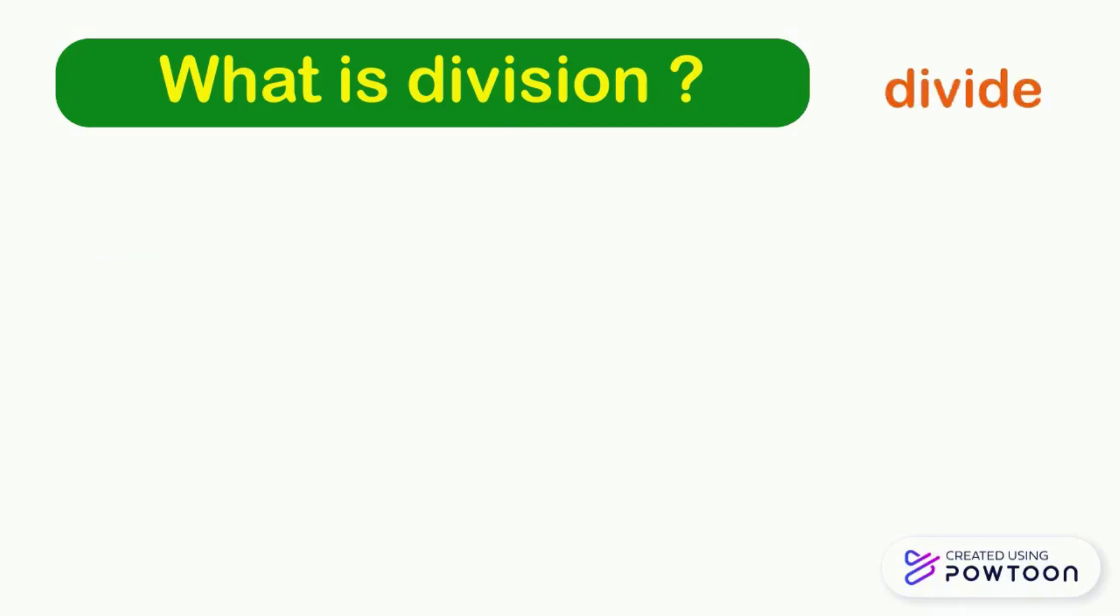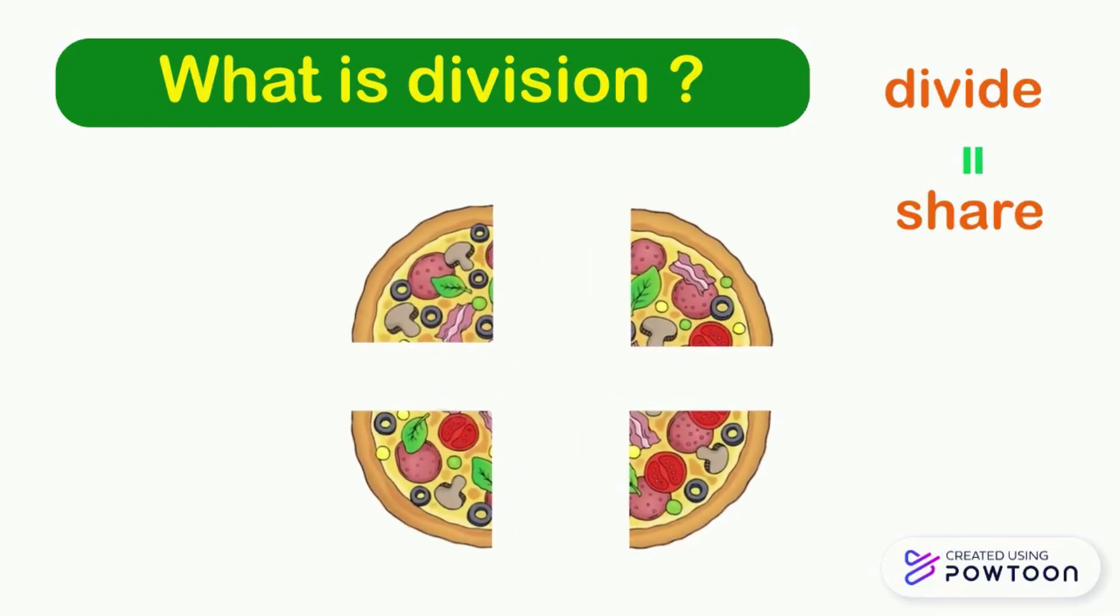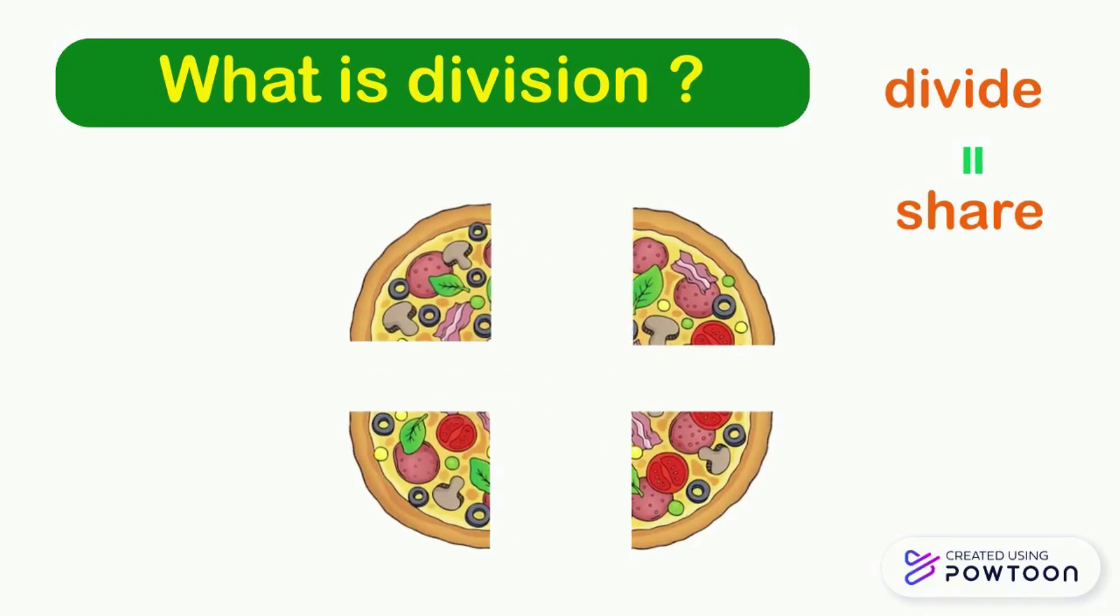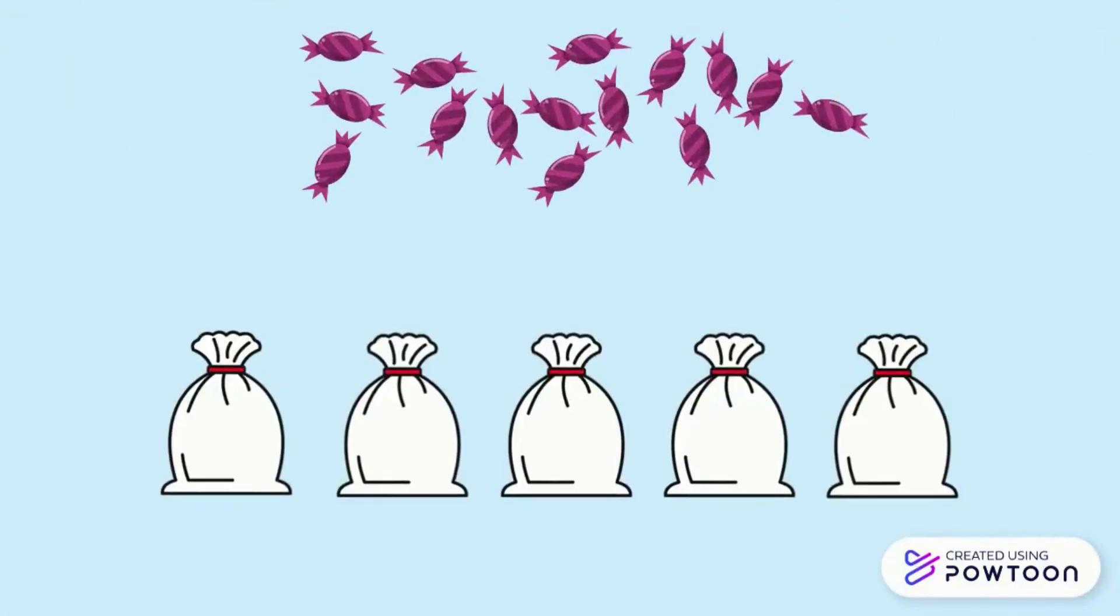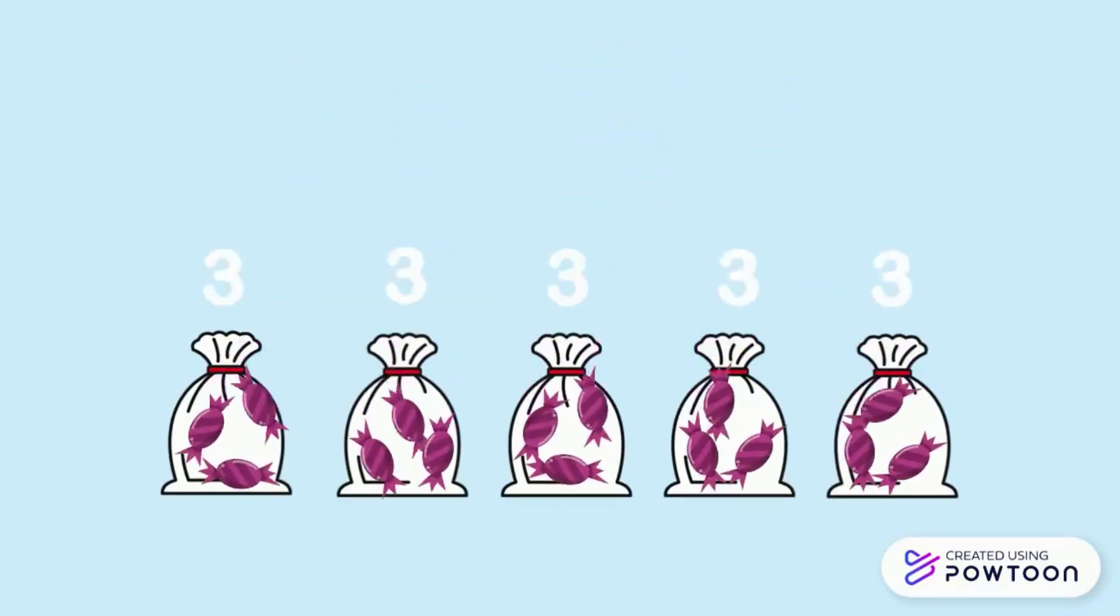Dividing means dividing a quantity fairly, that means splitting it equally to have several equal quantities at the end. For example, if we have a pizza and we split it into four equal parts, we say that we divided the pizza into four. We have 15 candies and we need to distribute them equally into five bags, so each bag must contain three candies.